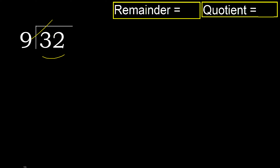9 multiplied by which number is nearest to 32 but not greater? 9 multiplied by 4 is 36 — 36 is greater. Multiplied by 3 is 27 — 27 is not greater.